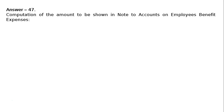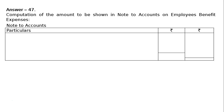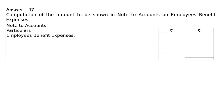Answer 47. Computation of the amount to be shown in notes to accounts on employee benefit expenses — that is, notes to accounts with particulars, details, and amount. The first item is employee benefit expenses.